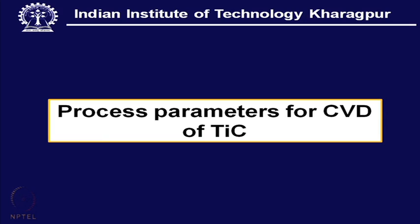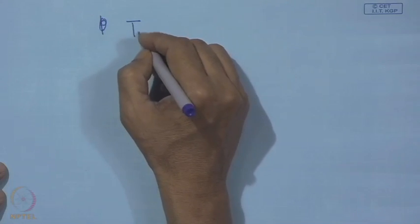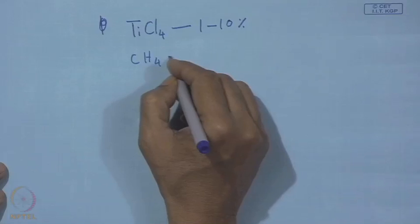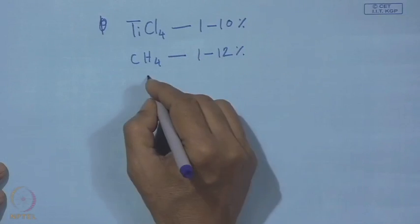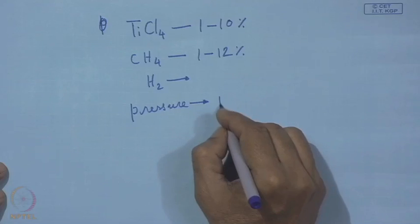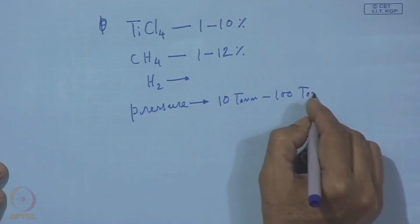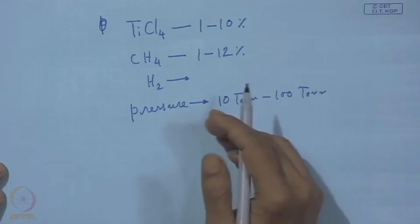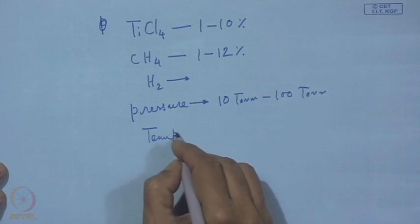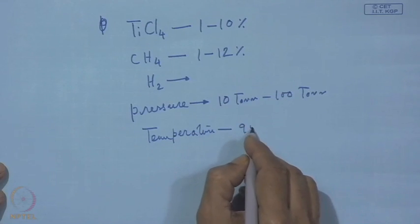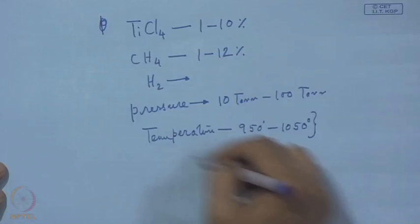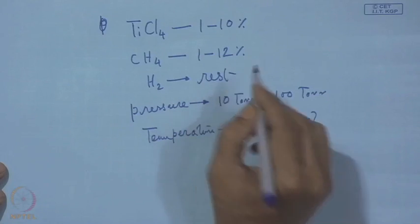The process parameters for CVD of TiC: TiCl₄ concentration 1–10%, CH₄ concentration 1–12%, rest is hydrogen. Process pressure is typically between 10 torr to 100 torr. Temperature is around 950–1050°C. These are indicative values for the normal operation range for CVD of TiC.